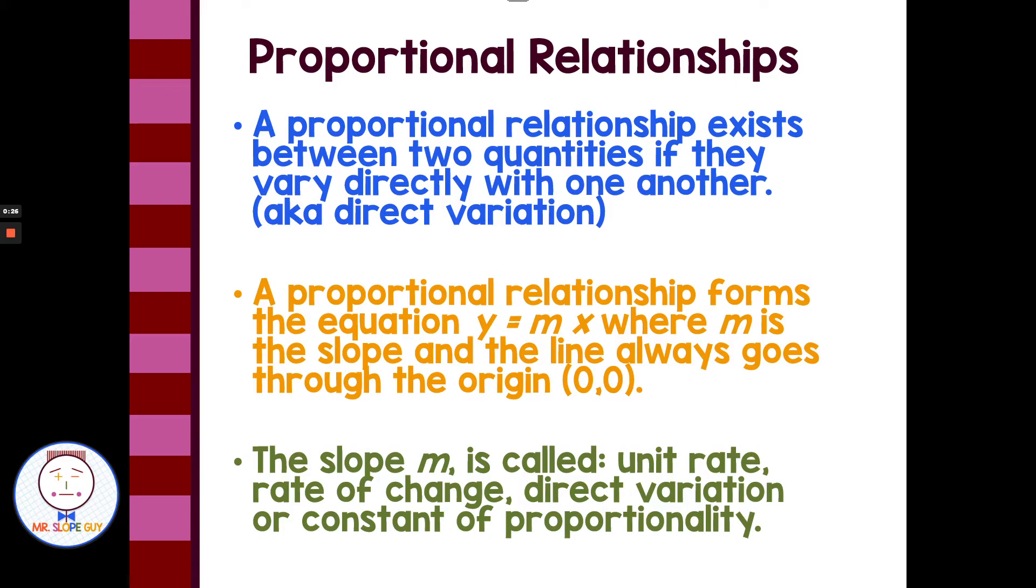The slope m is called unit rate, rate of change, direct variation, or constant of proportionality, and these are used pretty interchangeably. Unit rate would be a little bit more specific, wanting how much for one, but you'll see constant proportionality used when we're really talking about the tilt or slant of a line like with slope. It's just constant proportionality has the additional qualification that you're going through the origin at 0, 0.